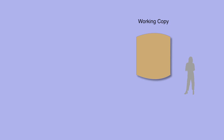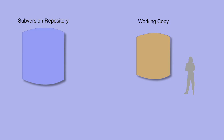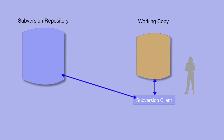Subversion manages two things: working copies — the files that you work with, edit, compile, link, and so on — and repositories, a central versioned file system. Working copies are maintained by the Subversion client. The client can also interact directly with the repository without the need for a server, although as will be discussed later, this is not usually the best way to use Subversion.